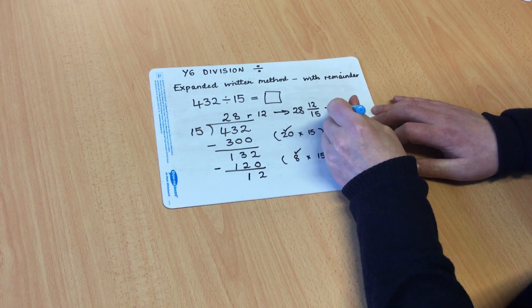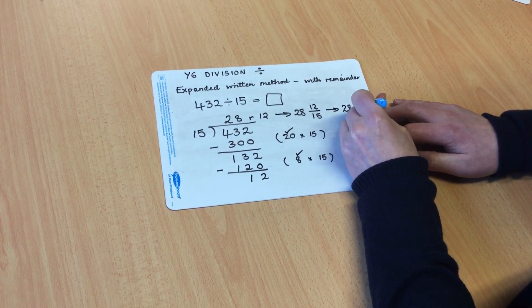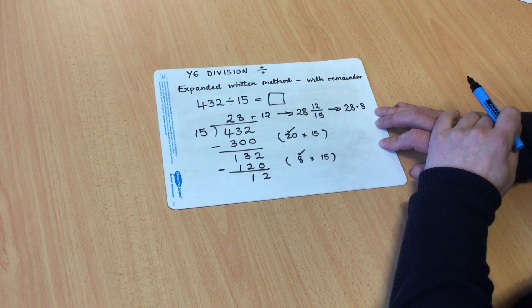Moving on, in Year 6, we would ask the children then to record that as a decimal fraction, which would be an answer of 28.8.